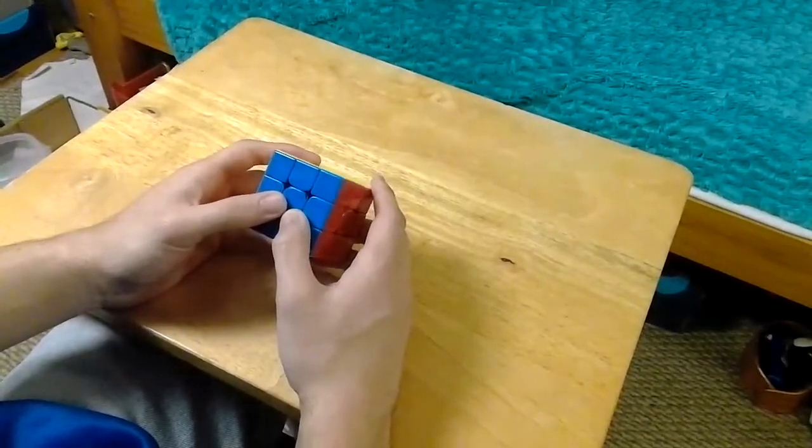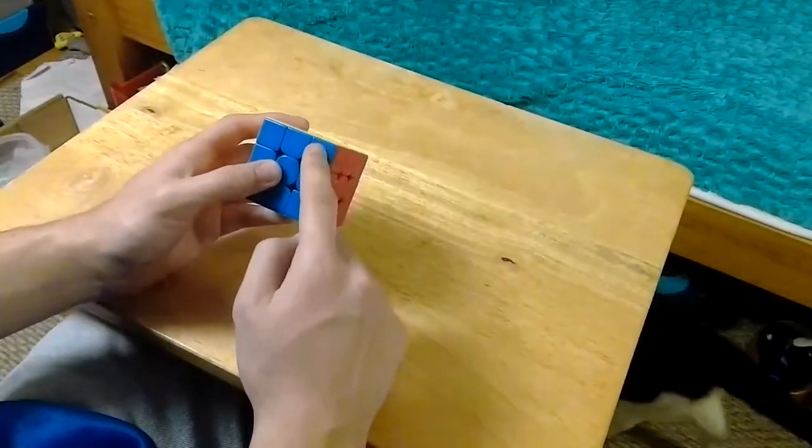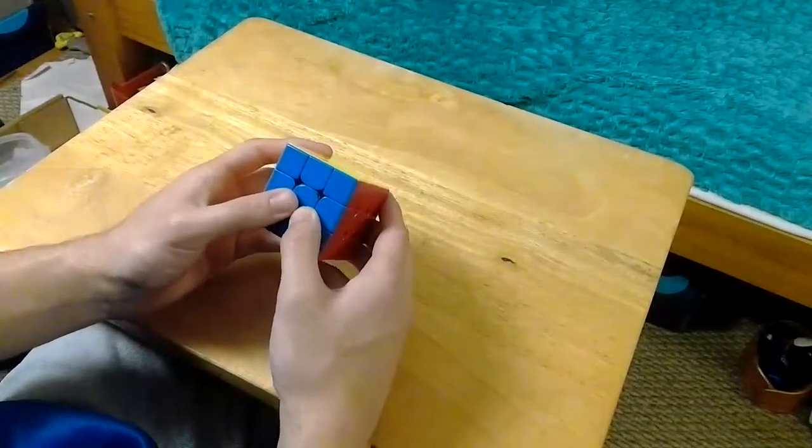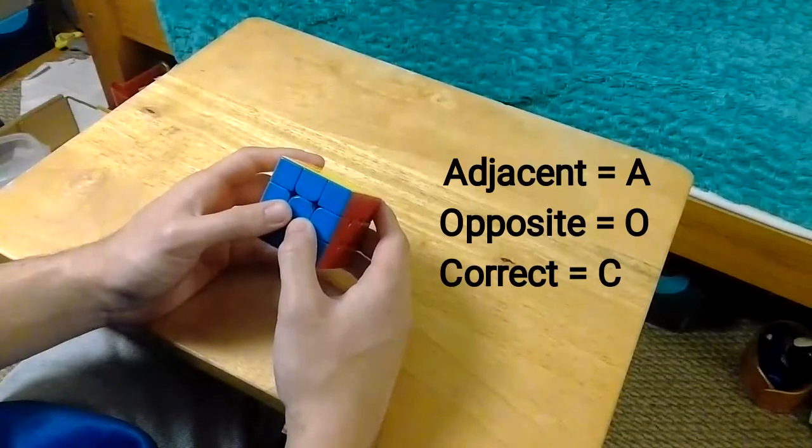What I've switched to is called Baum Harris. It works by comparing the FU edge to the FUR corner, and comparing the RU edge to the RUF corner. There will be three types of relationships: adjacent, opposite, and correct. These are abbreviated as AOC.